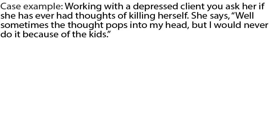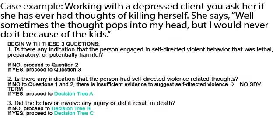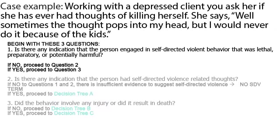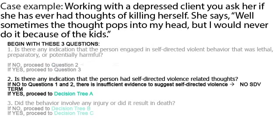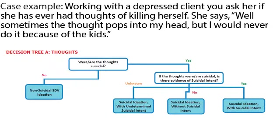On the next slide, we've provided a case example. You're working with a depressed client. You ask if she has thought of killing herself, and she says, 'Well, sometimes the thought pops into my head, but I would never do it because of my kids.' Look at the clinical tool and start with the three questions. The first question is: is there any indication that the person engaged in self-directed violent behavior, either preparatory or potentially harmful? The answer is no for this vignette, so you proceed to question two: is there any indication that the person had self-directed violent-related thoughts? The answer is yes, so you would proceed to decision tree A.